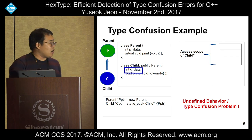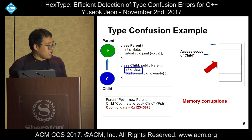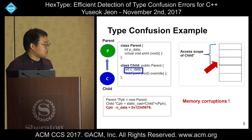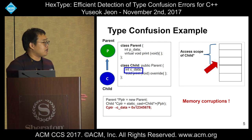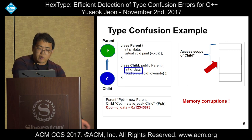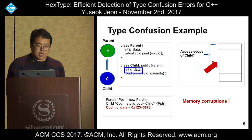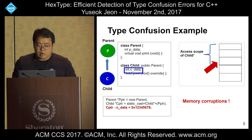This is the type confusion problem — it causes undefined behavior. If there is some code that overwrites this unexpected area and there is important information there, like a Vtable pointer, this memory corruption is a critical security problem.